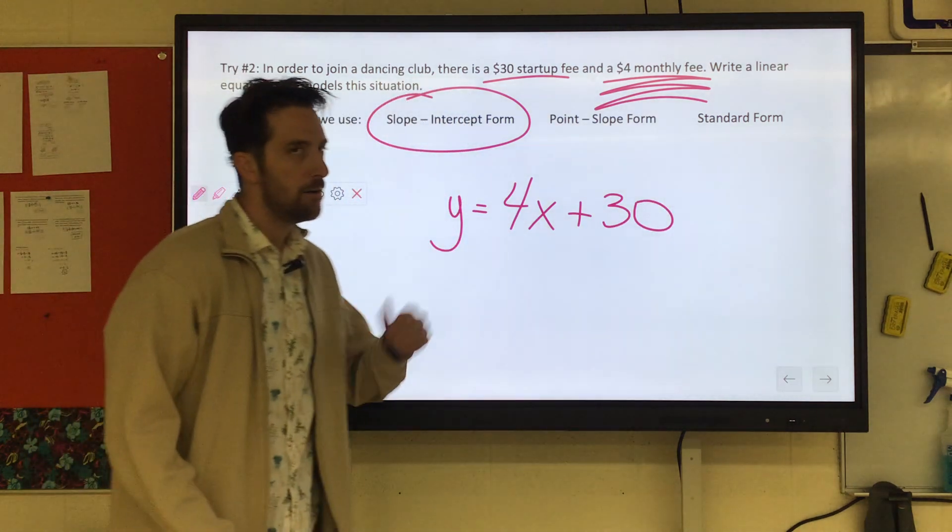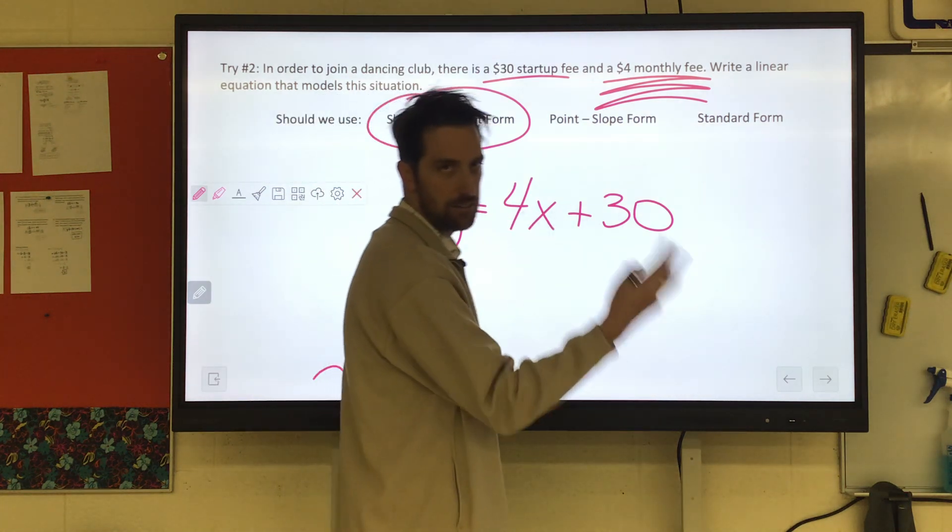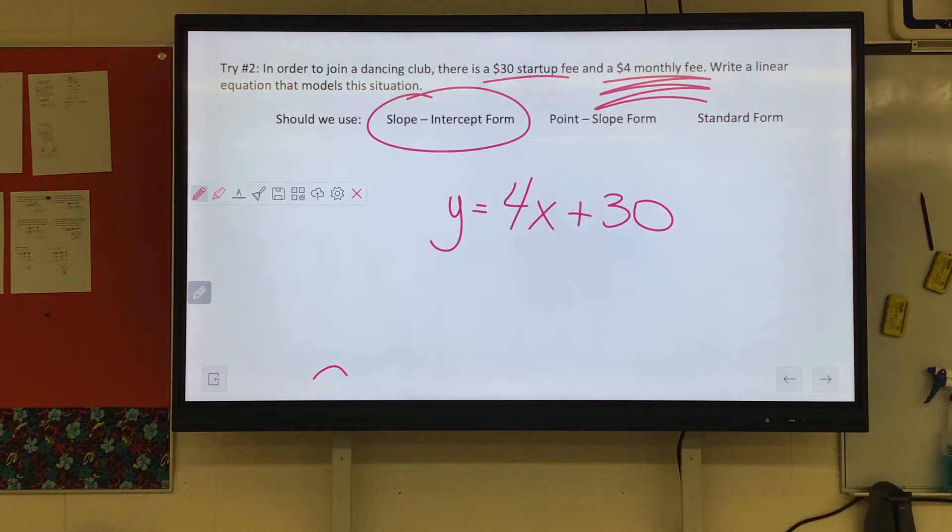And then if they said, how much would that be for 10 months? You would do 4 times 10, which is 40, plus 30 is 70. Unbelievable. I can't believe we're done. We're just that good.